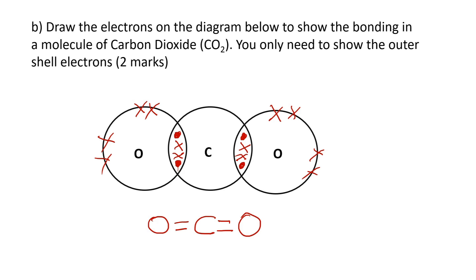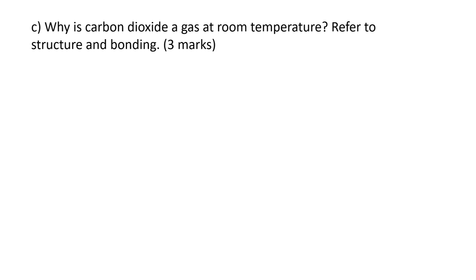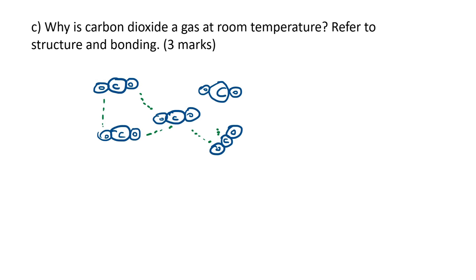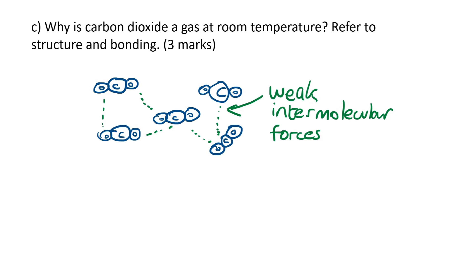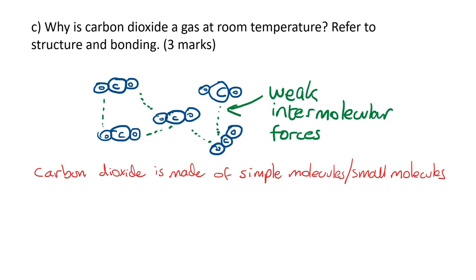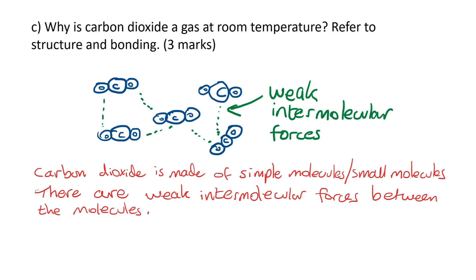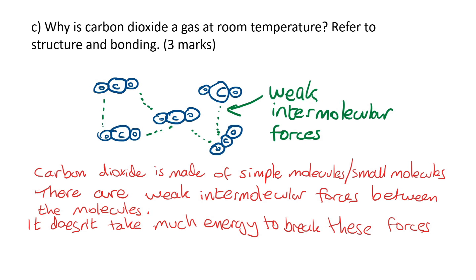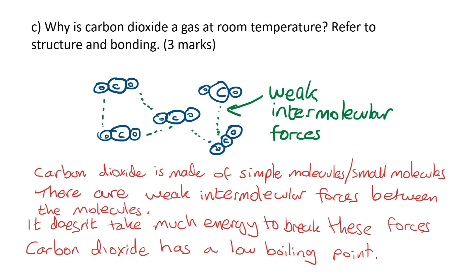The final question says why is carbon dioxide a gas at room temperature? Refer to structure and bonding. There are weak intermolecular forces between the molecules, and that's significant. First of all we need to say that carbon dioxide is made of simple molecules. There are weak intermolecular forces between the molecules. It doesn't take much energy to break these forces, and that means carbon dioxide has a low boiling point. I'll put a link up here to a previous video if you need a reminder about the properties of simple molecules.